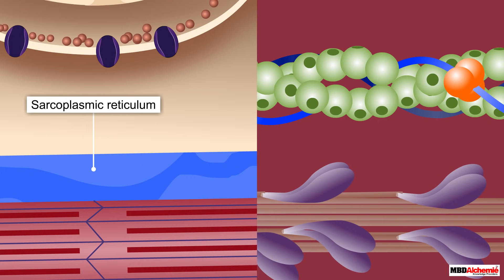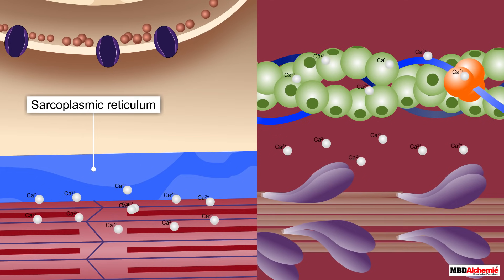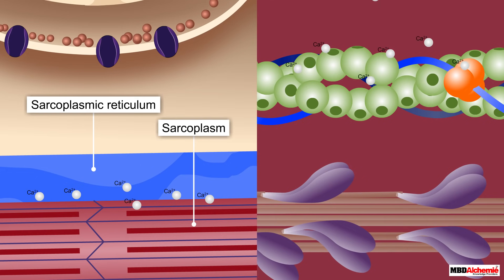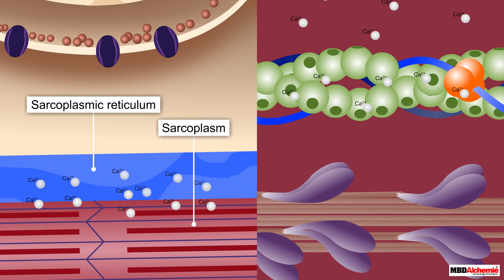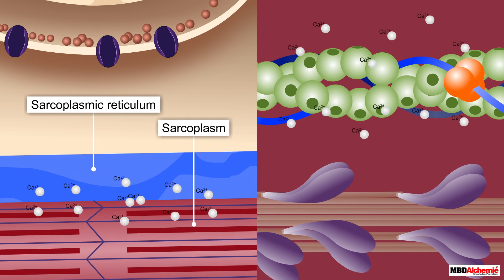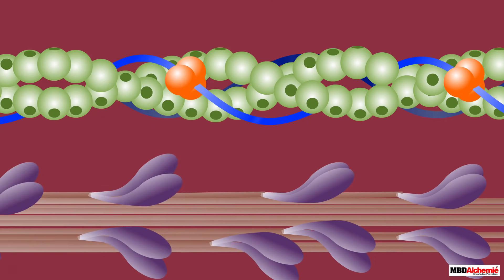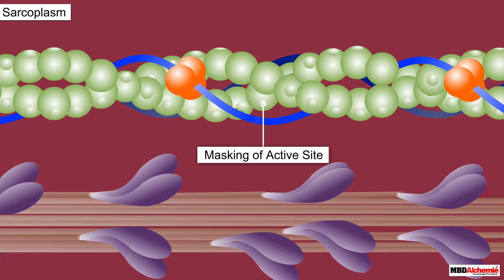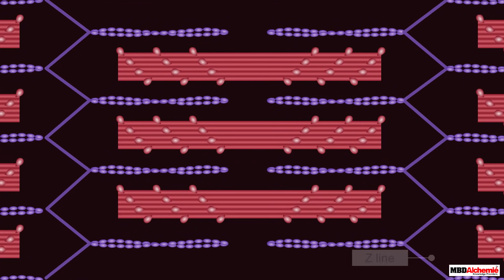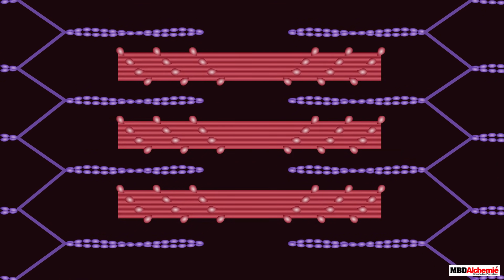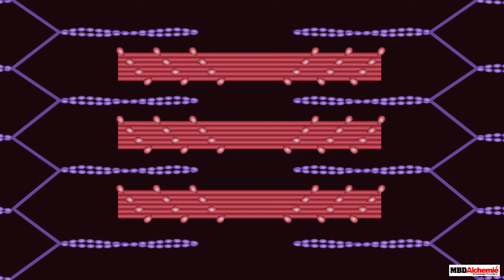As the signal stops, no further release of calcium ions from the sarcoplasmic reticulum occurs. This enables the pumping of calcium ions back from the sarcoplasm into the sarcoplasmic reticulum. This results in the masking of active sites on the actin filaments, causing the Z lines to return to their original position — that is, relaxation.